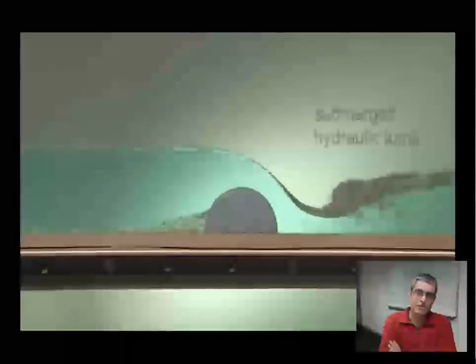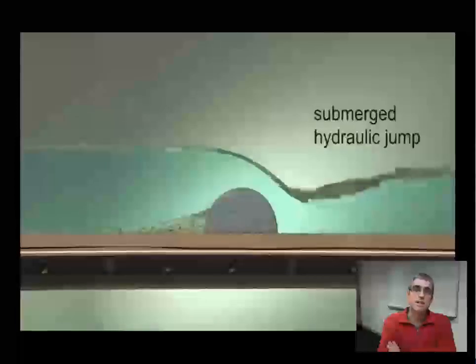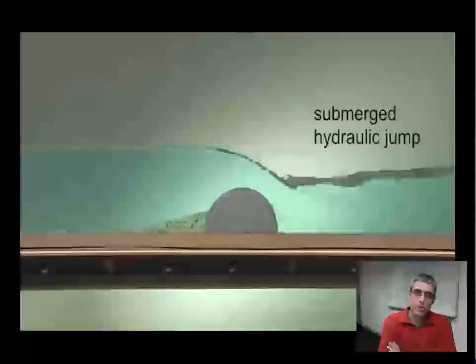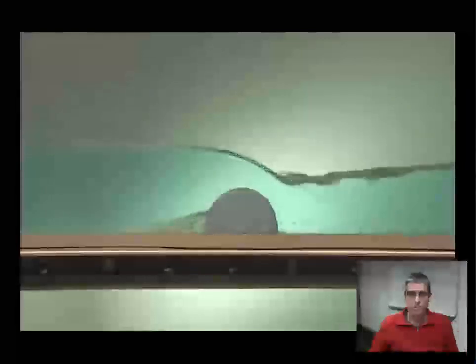And here comes the hydraulic jump. So it's moving, it's migrating upstream, it's unstable, and eventually it actually submerges that region of supercritical flow. And we have a submerged hydraulic jump.